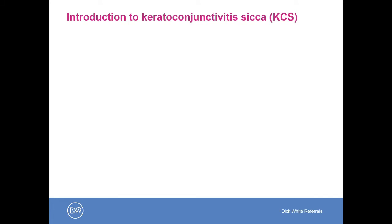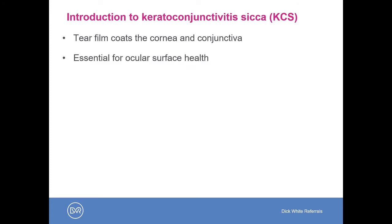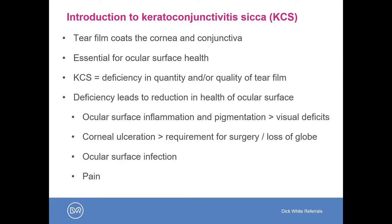So first, a bit of introduction about dry eye. The tear film is the watery layer which covers and coats the ocular surface — the cornea and the conjunctiva — and this is essential for optimal ocular surface health. Dry eye, or KCS, is any deficiency in the quantity and/or the quality of this tear film, and any such deficiency will lead to a reduction in the health of the surface of the eye.